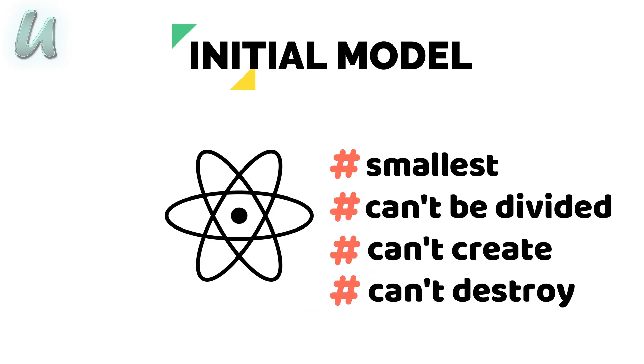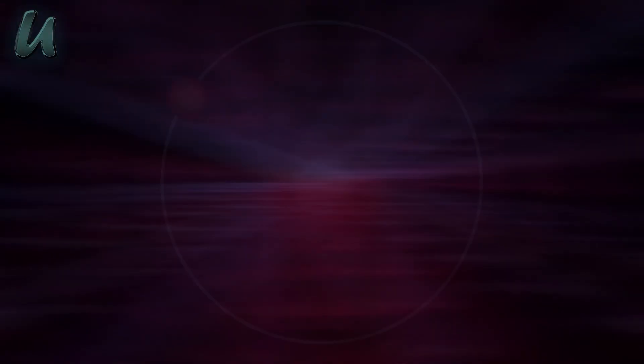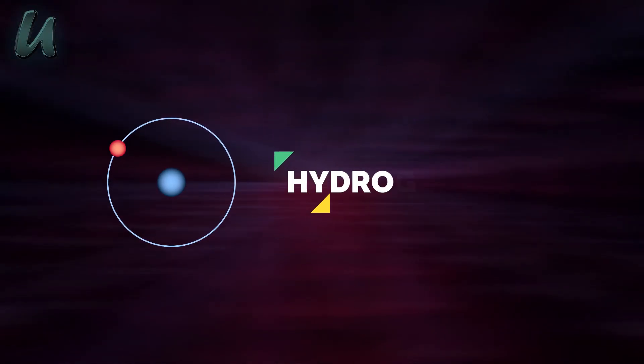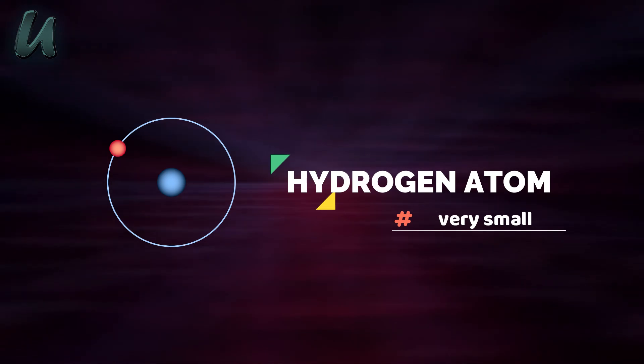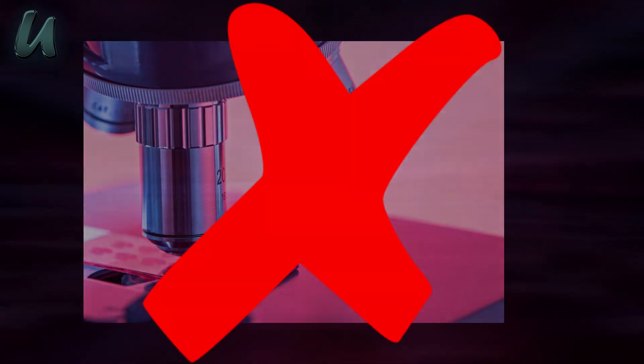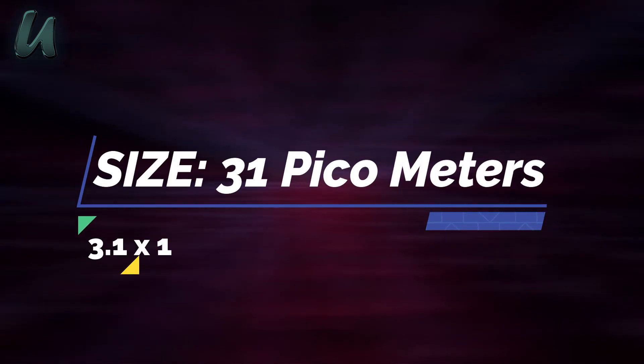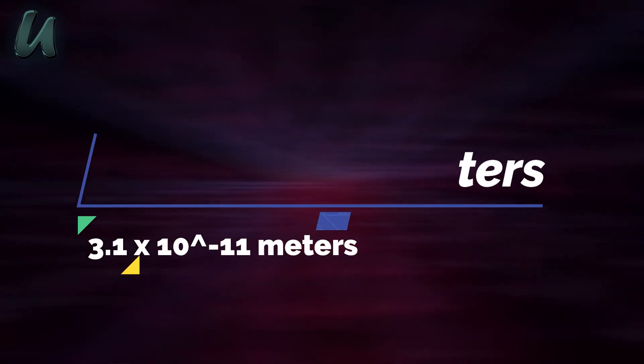Neither atoms could be created nor could they be destroyed. So here we have a hydrogen atom and this is very small, much much smaller than we can actually see even with the most powerful microscopes. But we can still go smaller than that. The size of this atom is 31 picometers or 3.1 times 10 to the power minus 11 meters.